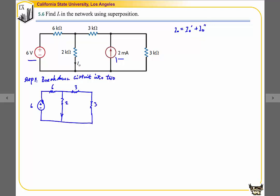We have a 3kΩ on this side. This is the current I0'. In the second circuit, we will keep the current supply and set the voltage supply to zero.